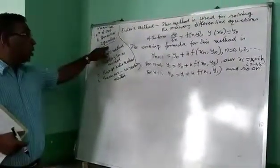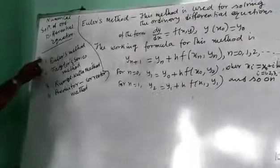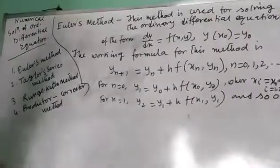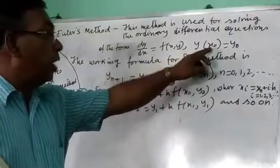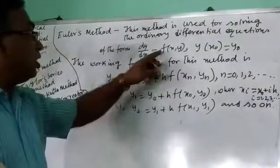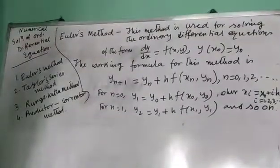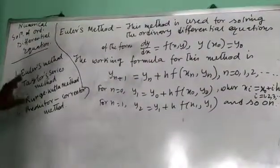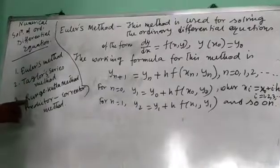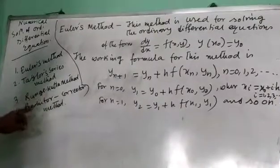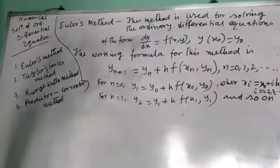How to solve ordinary differential equation? By these four methods. The ordinary differential equation is dy/dx equal to f(x,y), with y(x0) equal to y0. We can solve this by four methods: number one Euler's method, number two Taylor's series method, number three Runge-Kutta method, number four Predictor-Corrector method.